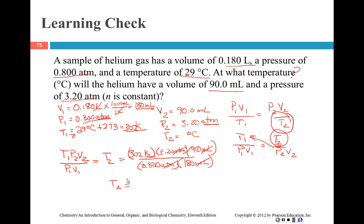So T2 is going to be 302 times 3.2 times 90, which is 86976. Some of y'all are having problems with your calculator, and if you'll do everything on the top and then everything on the bottom, you won't have that problem. So then 0.8 times 180 gives us 144 on the bottom. That's going to give us K. So 86976 divided by 144 gives us 604 K.